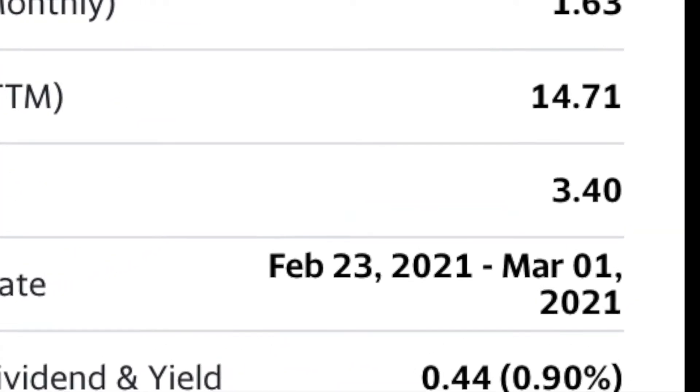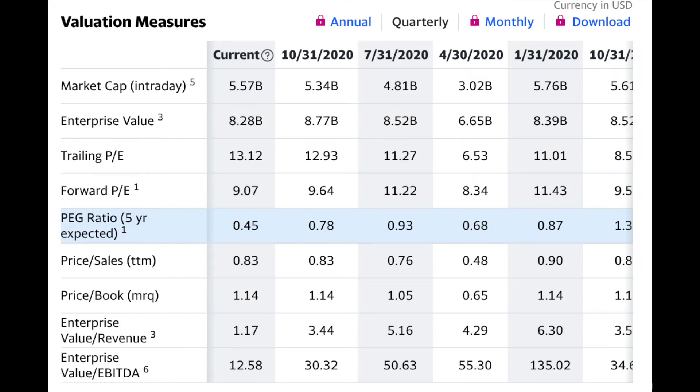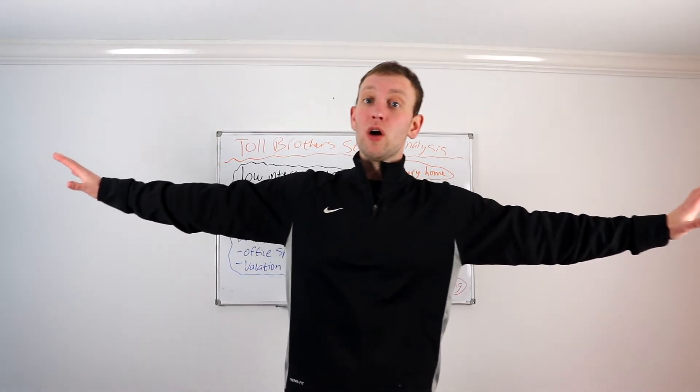And looking at some of these metrics, it trades cheap. The stock sales rate is pretty cheap. Current PE of 14, trailing PE of 13, forward PE of nine. Sign me up for that all day long. Pay ratio of 0.45. Price to sales ratio of under one. Price to book ratio of just over one. I want all of that.